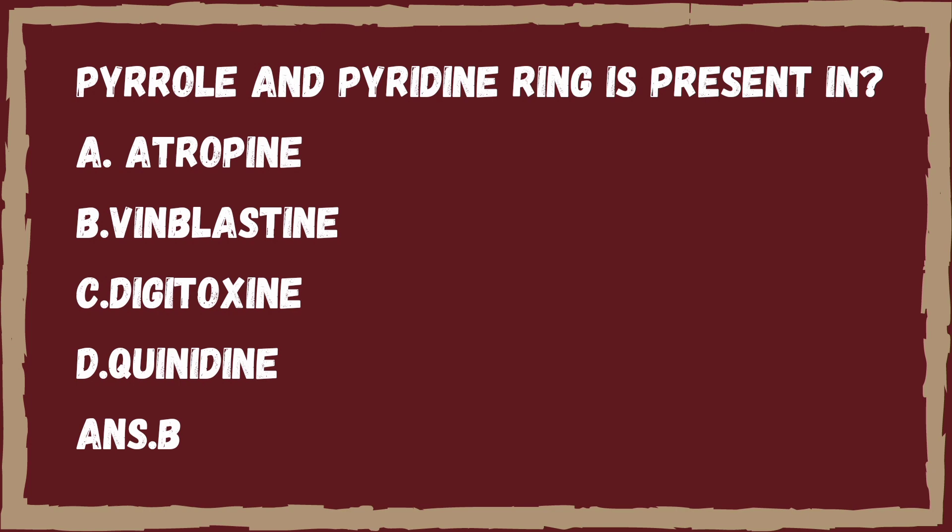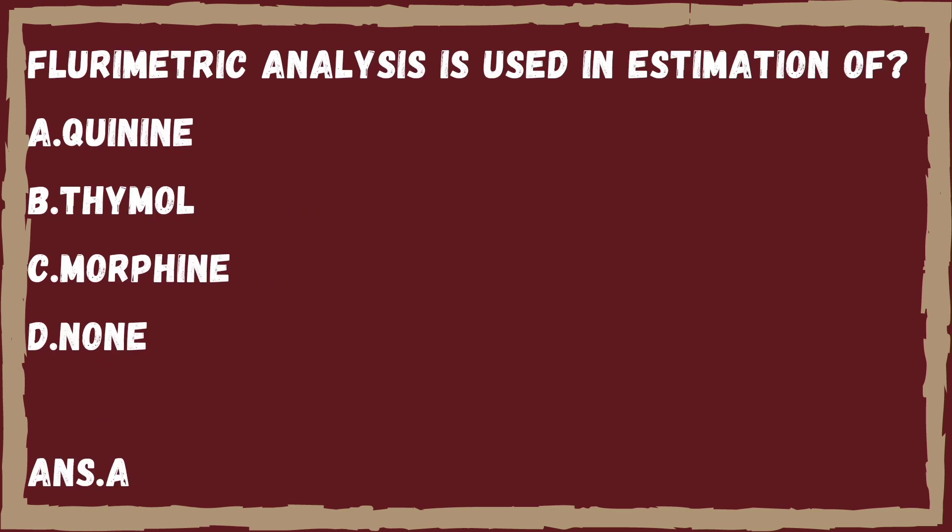Next question: fluorimetric analysis is used in the estimation of — Option A, quinine. Option B, thymol. Option C, morphine. Option D, none. The right answer is Option A, that is quinine.